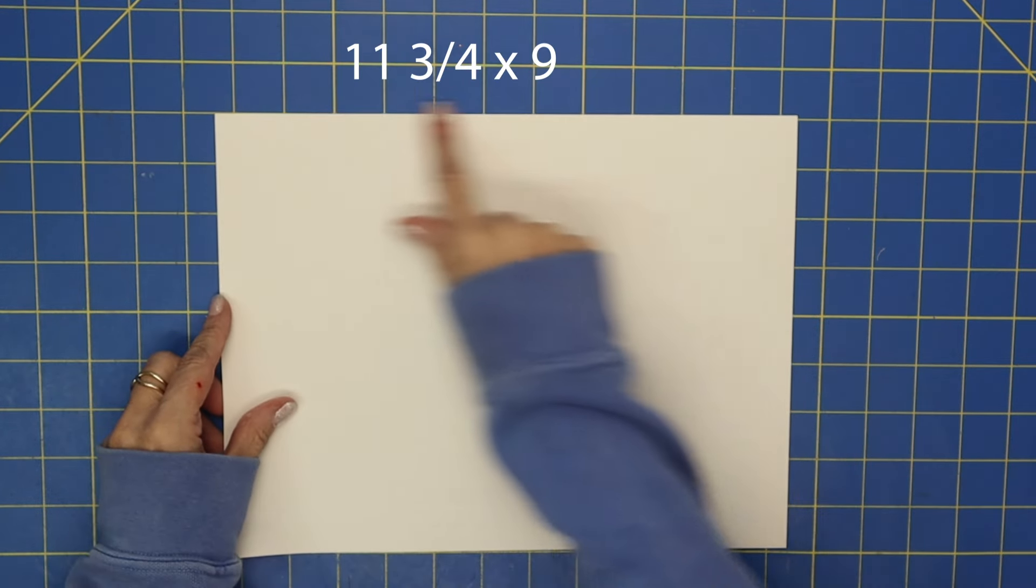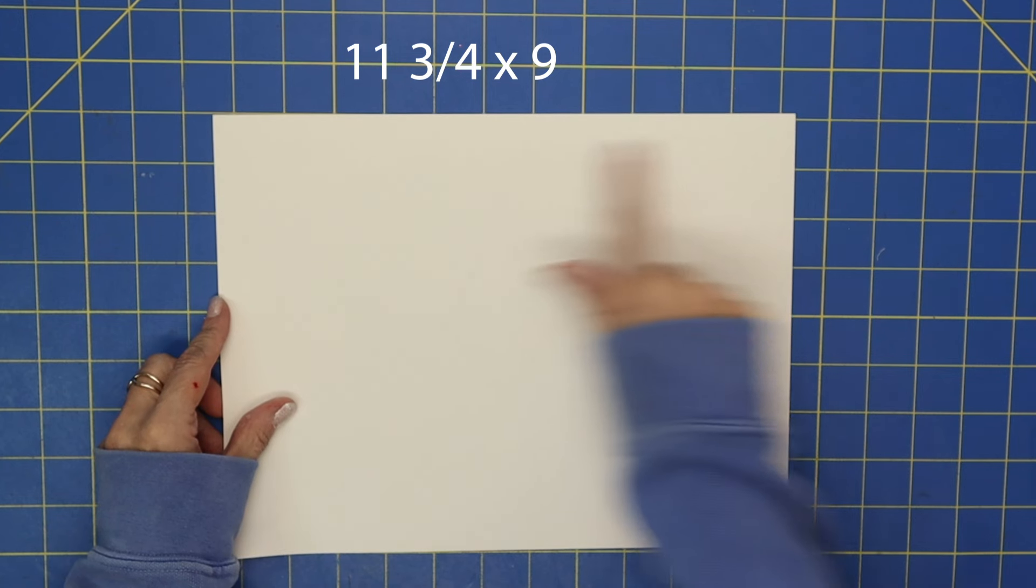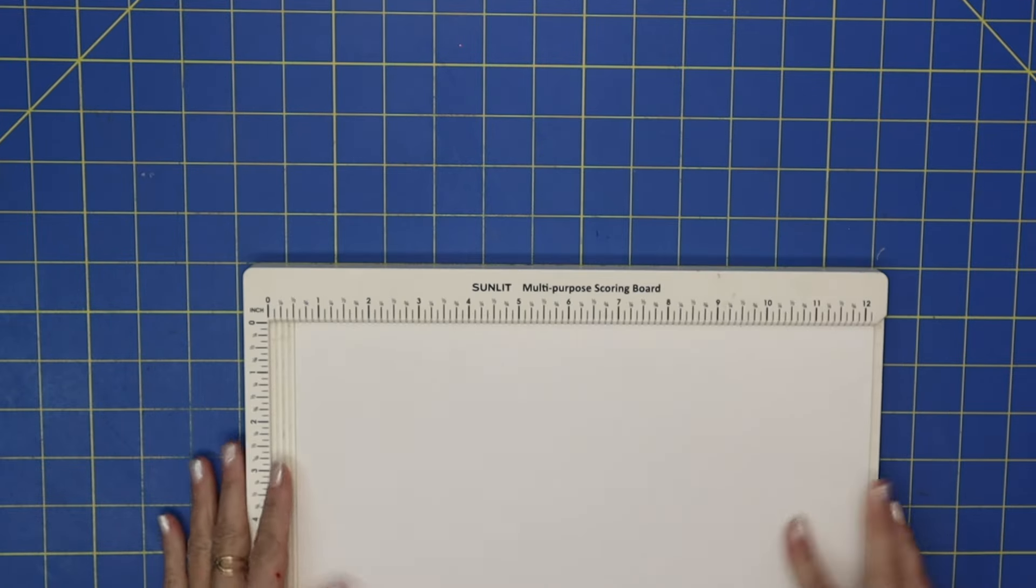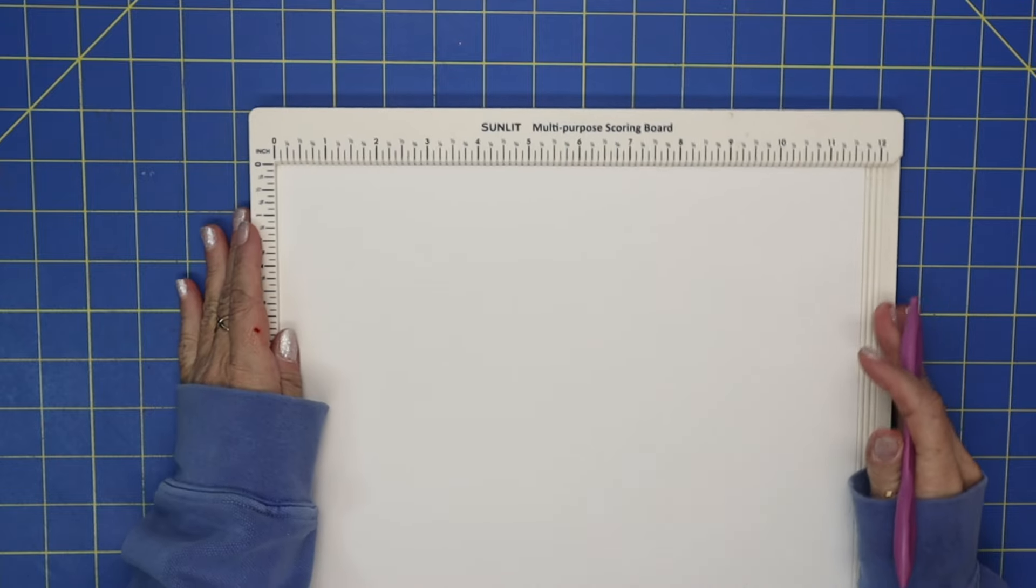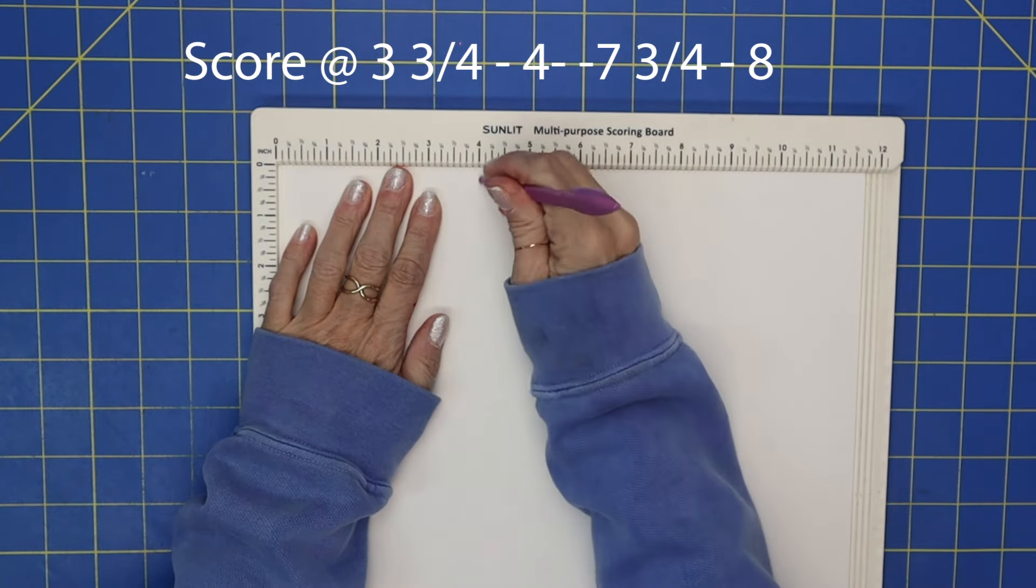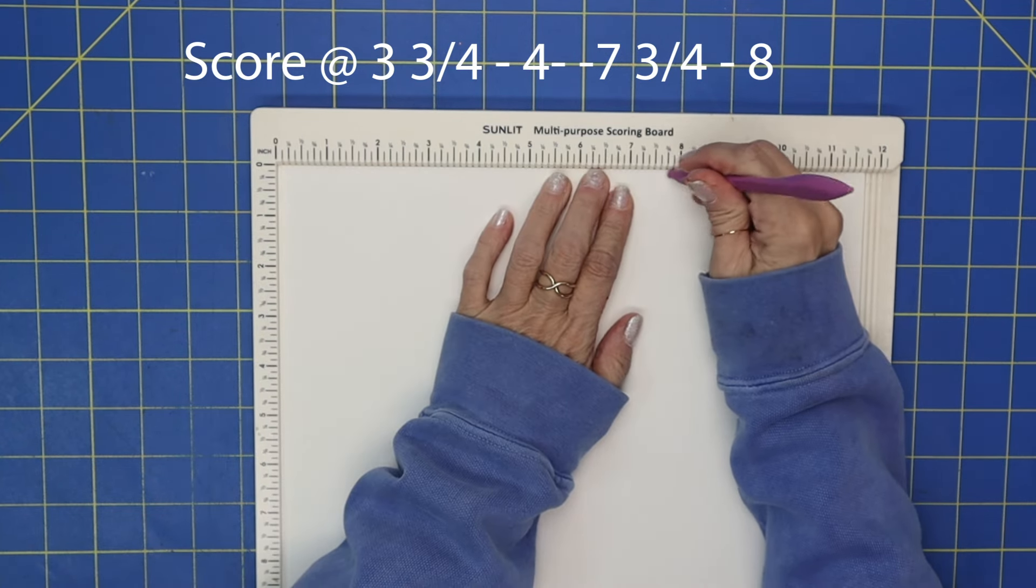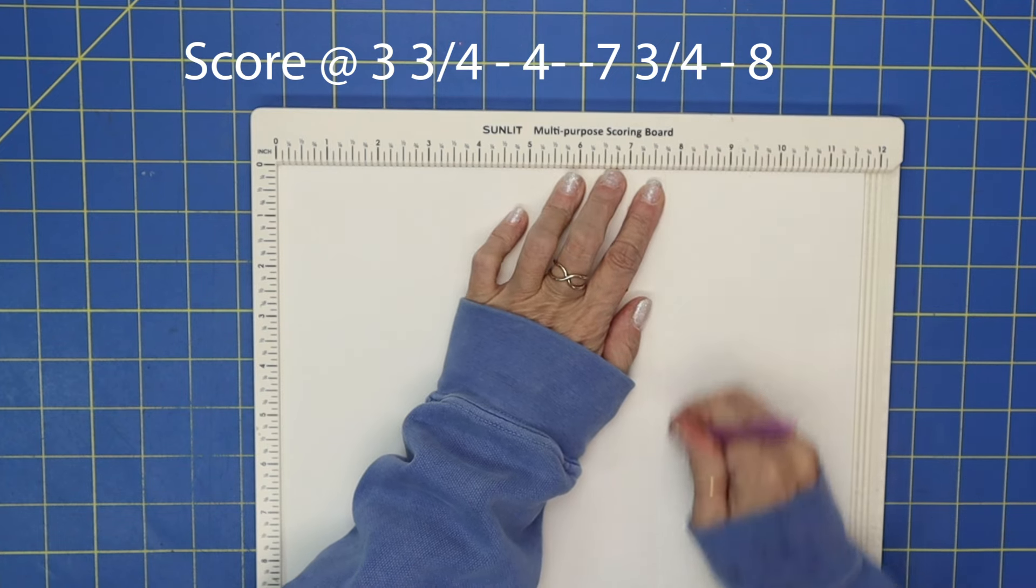What you will want is a piece of paper that is 11 and 3/4 by 9 inches. Then go ahead and bring in your scoreboard. So on the 11 and 3/4 inch side, you want to score it at 3 and 3/4, at 4, at 7 and 3/4, and at 8.